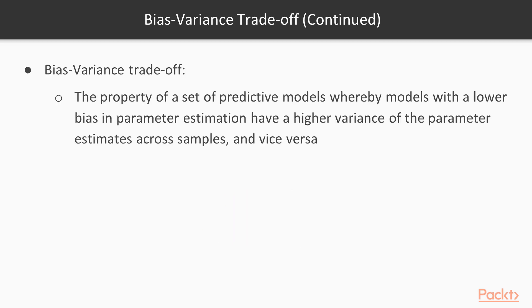So, bias-variance trade-off is a trade-off between decreasing the bias at the cost of getting a high variance, or decreasing the variance at the cost of getting a high bias. And this is one of the areas where ensemble learning comes into picture.